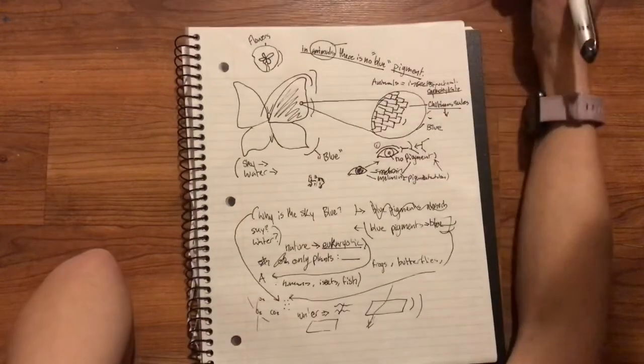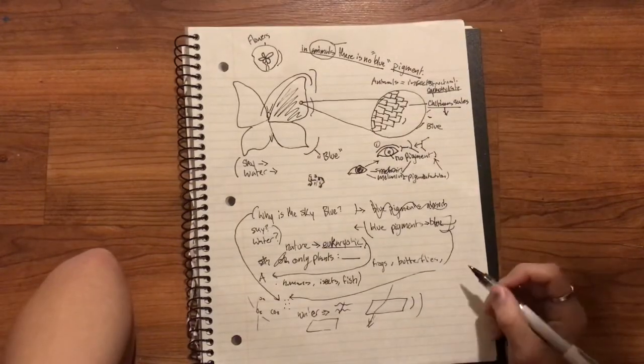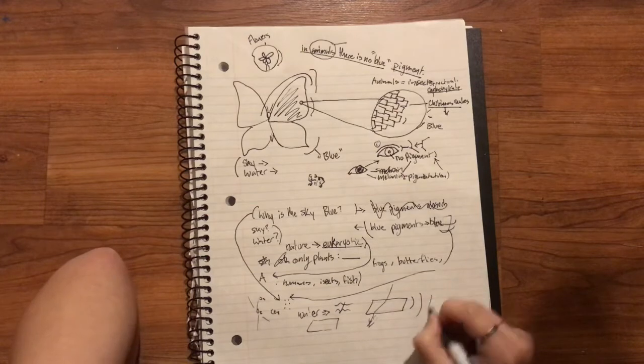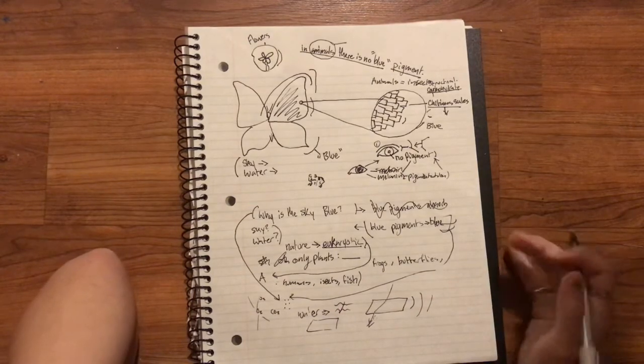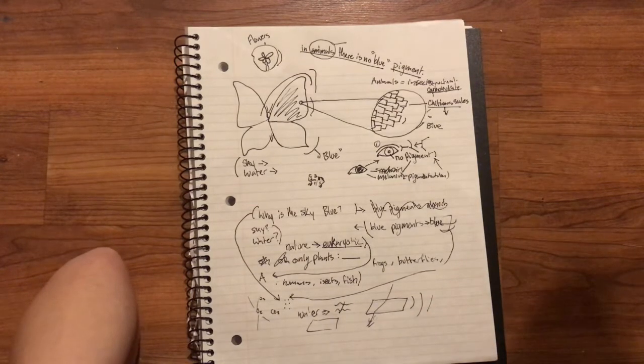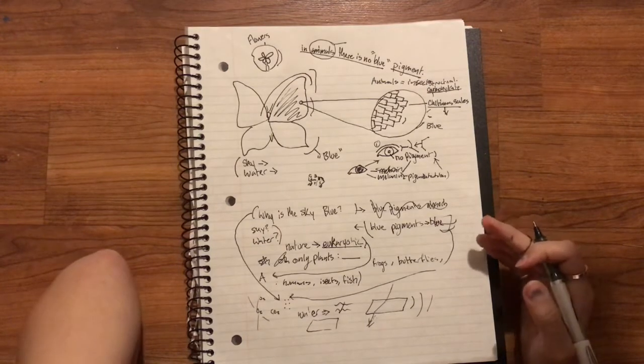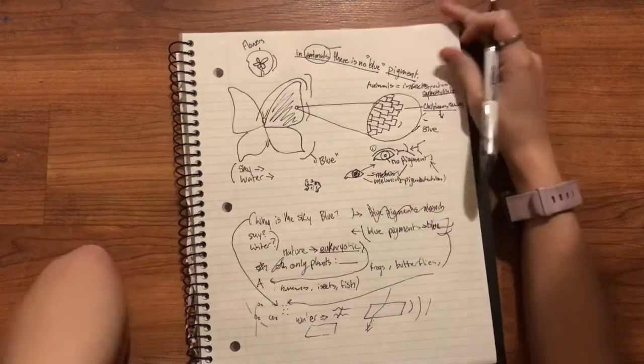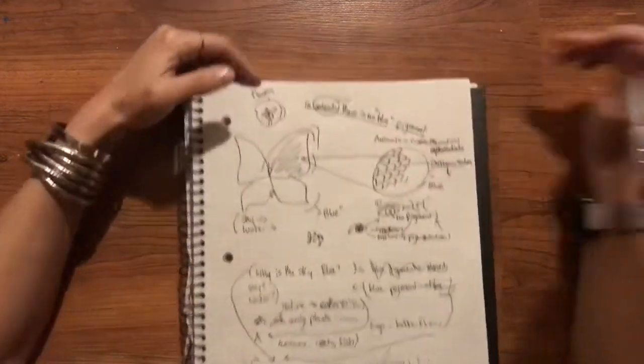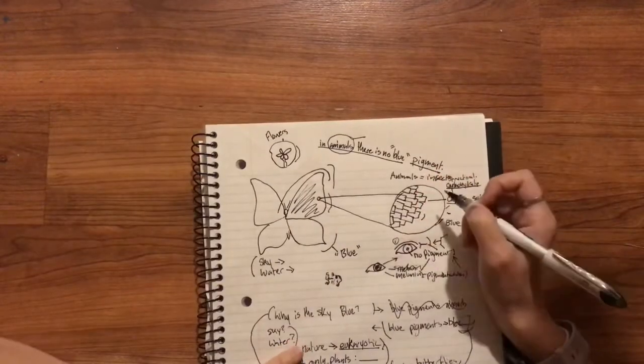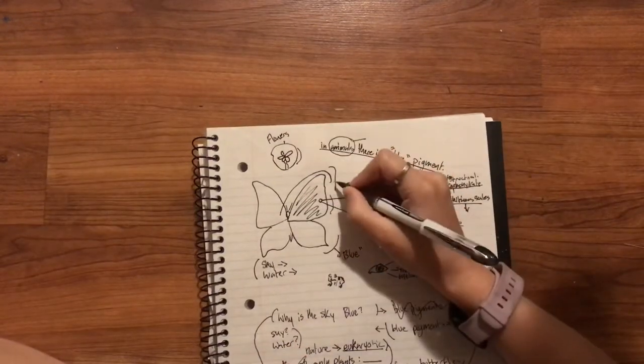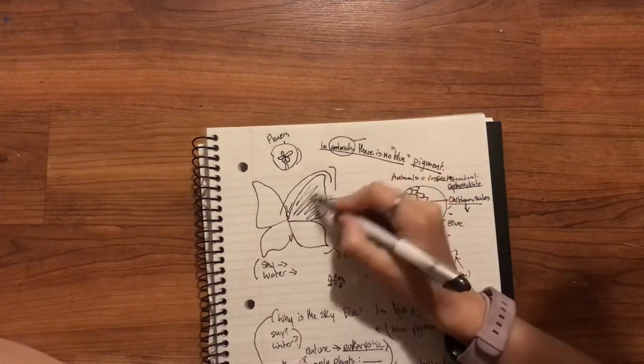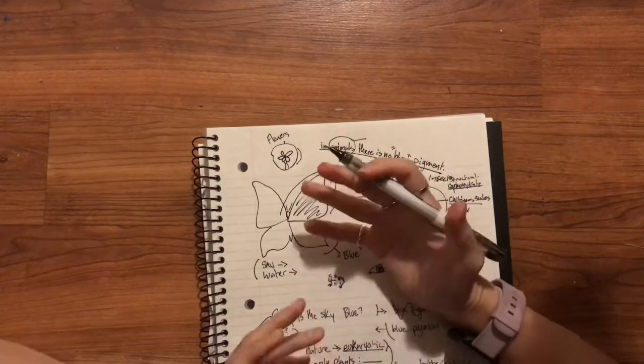So if we have these answers—it's the particles scattering light, they're not actually blue, they're just creating the effect of blue—then what is it that's being refracted through? So in the case of butterflies, it's actually...